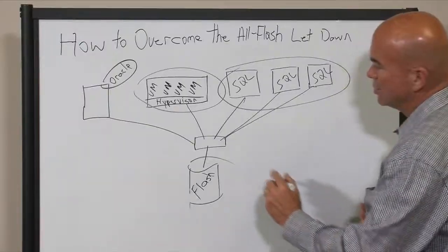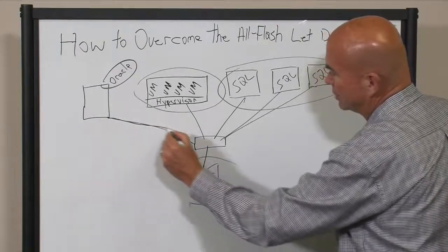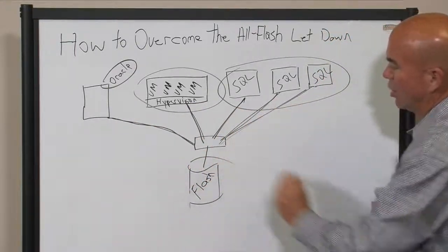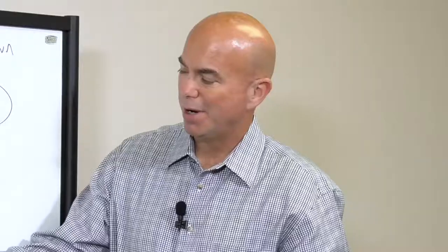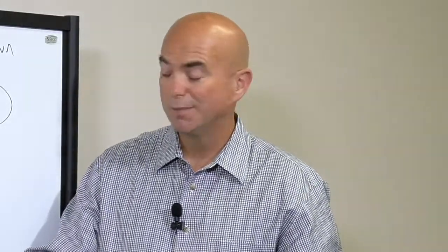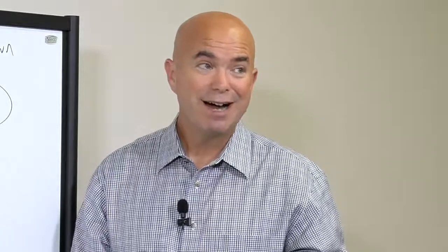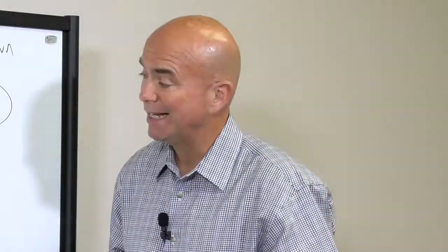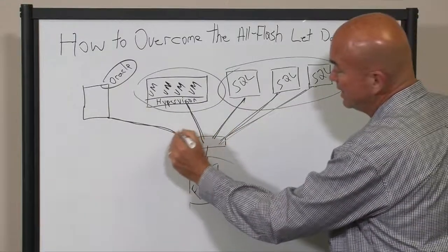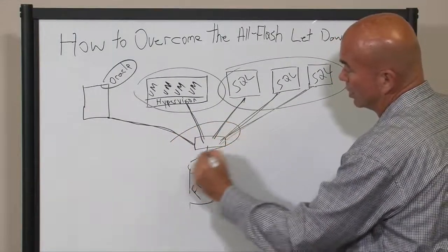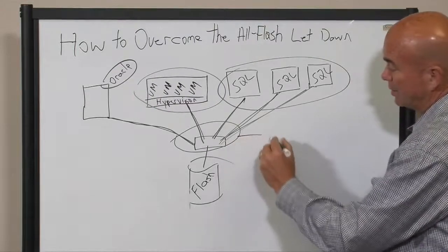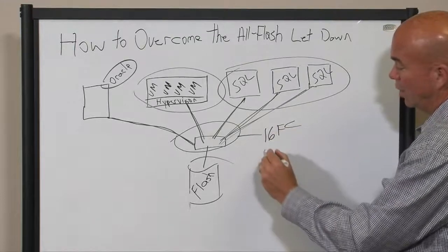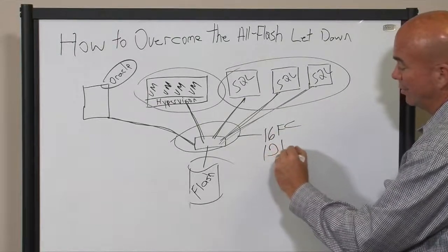The first challenge you have is this network is now exposed for what it is. In a hard drive world a bad network could hide behind the latency of a hard disk system. In a flash world there's nothing to hide behind. The flash is going to respond as fast as it can possibly give data. So almost immediately you need to look at this network and see if it's time to upgrade it. Typically we're looking at 16 gig fiber channel or at least 10 gig ethernet.